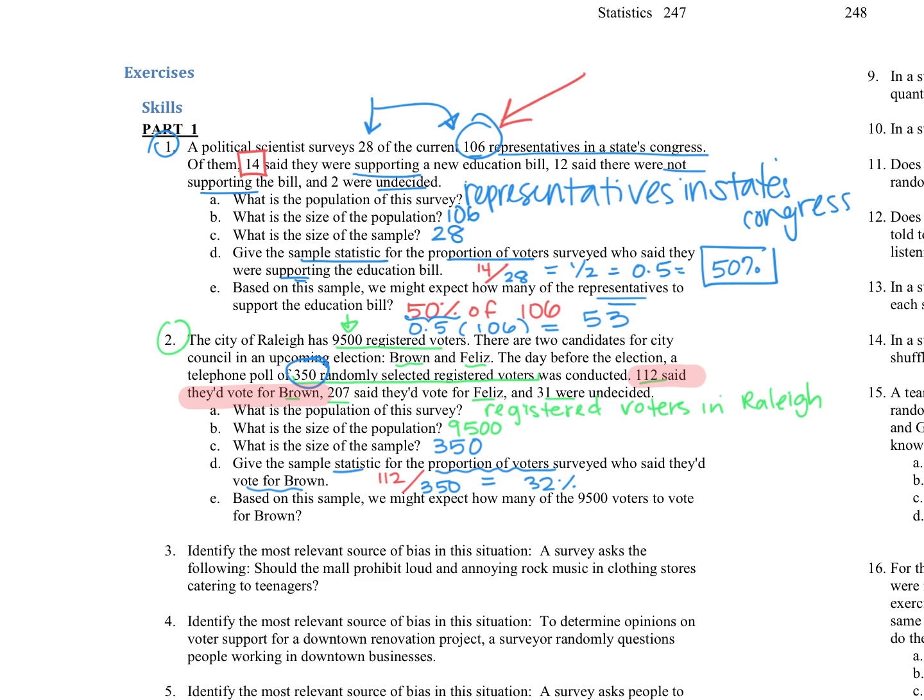Now, based on that sample, we might expect out of those 9,500 voters who would vote for Brown, well, we could take, again, it's that percent of that sample, 32%, but then take it of the whole group. Because if they're a representative of the whole group, then we'd assume 32% of that big group would also vote for Brown. So, again, you could write the decimal, that's 0.32, multiply it by 9,500, and it gets that we all have about 3,040 voters. That's what we might expect, would vote for Brown.